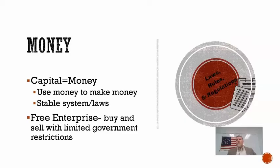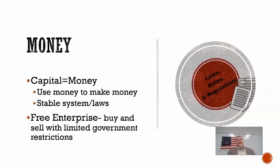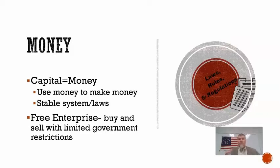What goes along with this is the idea of free enterprise — buying and selling with limited government restrictions. Today we have a lot more rules and regulations than we had pre-industrial revolution, making it more difficult to start a business than it was in the 1800s. At the same time, many of those rules are there to protect society as a whole. There's a balance and trade-off between rules and regulations and innovation and creativity.